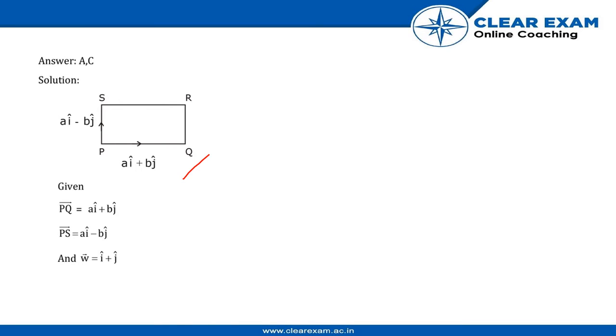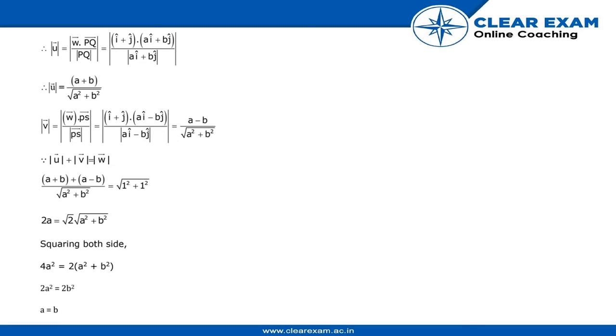Therefore u is equal to (a + b) / √(a² + b²), and v is equal to (a - b) / √(a² + b²).